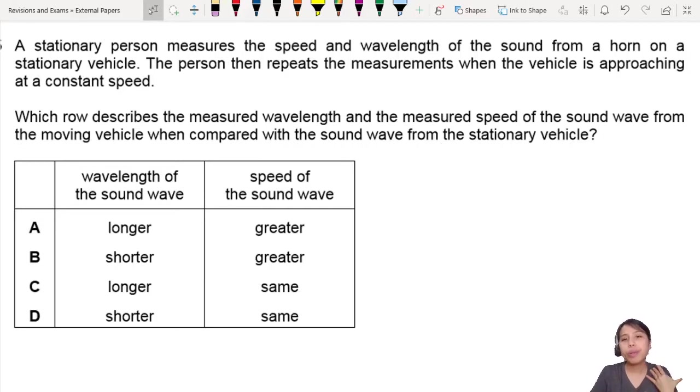A stationary person measures the speed and wavelength of the sound from a horn on a vehicle. Then the vehicle is approaching at a constant speed.